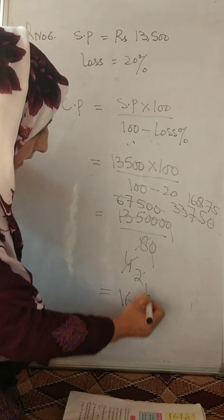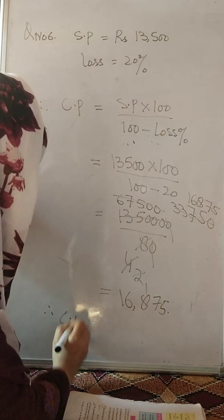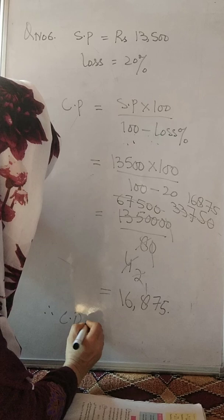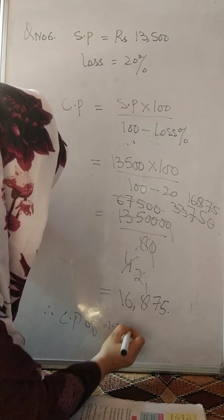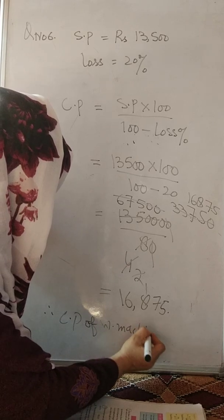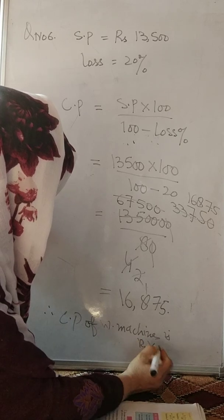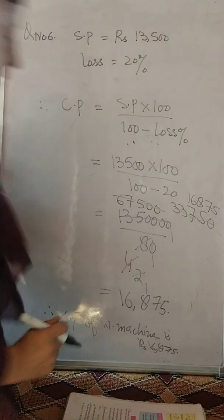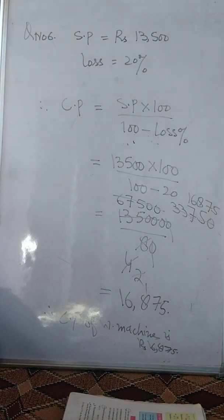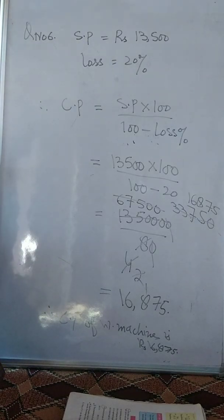Therefore CP of washing machine is 16,875 rupees. Iske baad ab jy question number 7 hai 8 hai belkul isi tarah hai profit and loss ki tajaisse hamne gita.